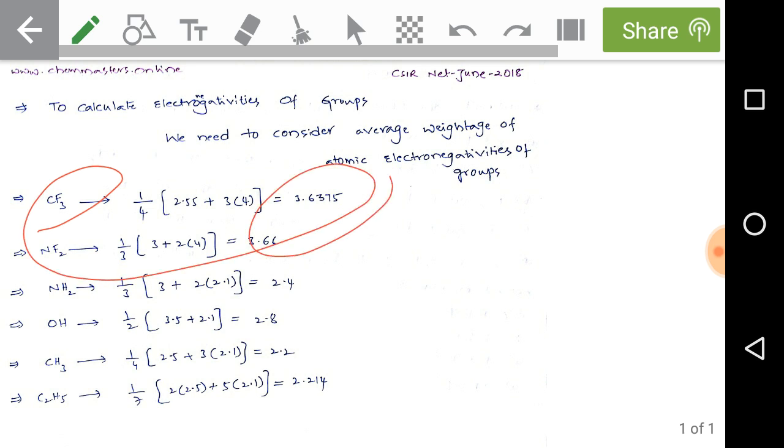Calculate for NH2. It has three atoms, so 1/3 into [nitrogen has 3 electronegativity and hydrogen has 2.1, 2 hydrogens] = 1/3(3 + 2×2.1) = 2.4 electronegativity value for NH2.